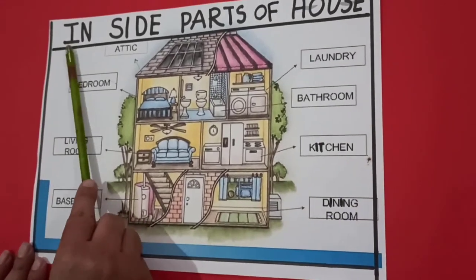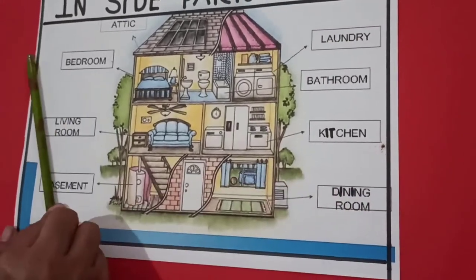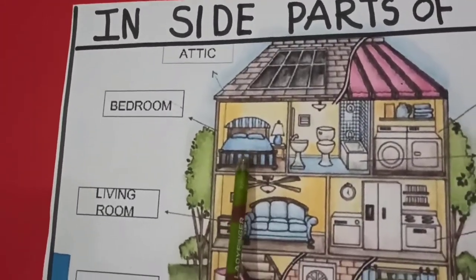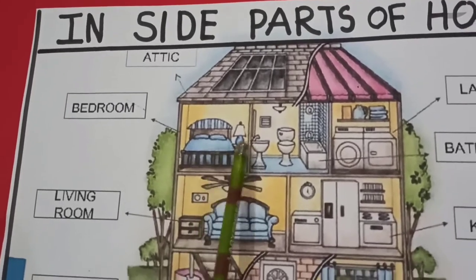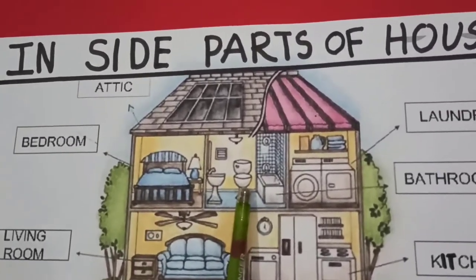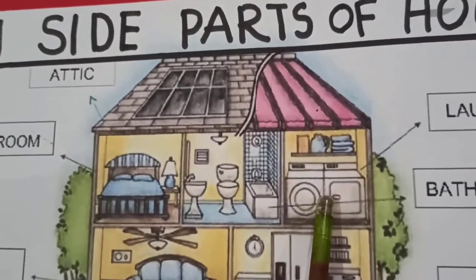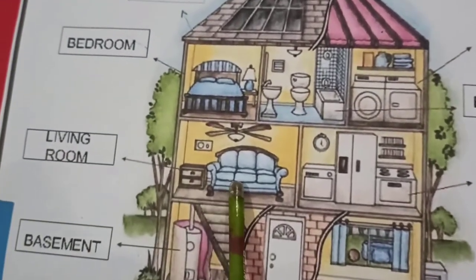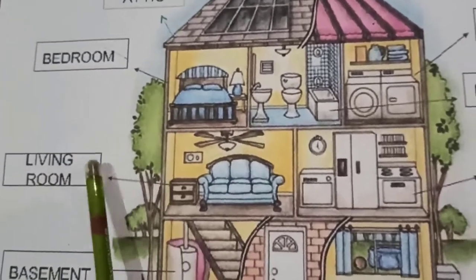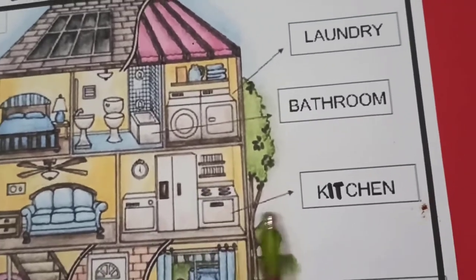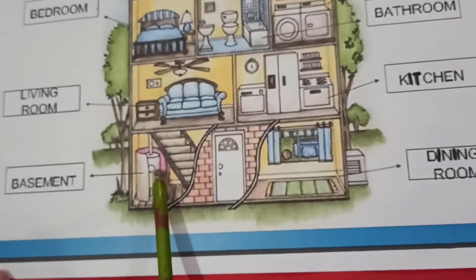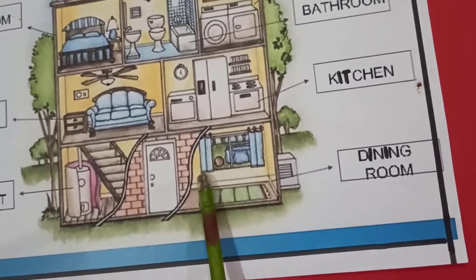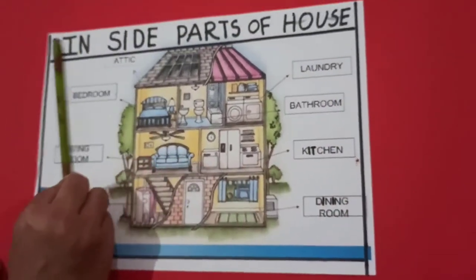Now, this is the inside parts of a house. This is a bedroom — see the bed; lots of things are there. This is a bathroom. This is the laundry, where we wash our clothes and other things. This is called the living room — see, sofa, fan, and cupboard are there. This is the kitchen. And this area is called the basement. And this is our dining room. These are the inside parts of our house.